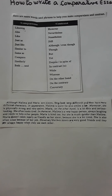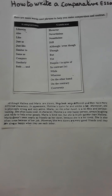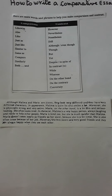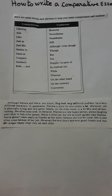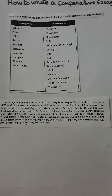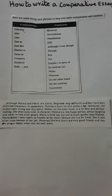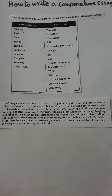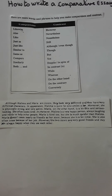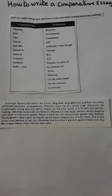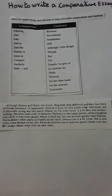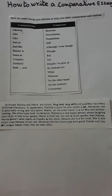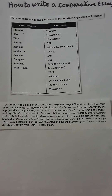Although Halima and Maria are sisters, they look very different and they have very different characters. In appearance, Halima is quite fat and smiles a lot. Moreover, she is physically strong and very active. Maria, on the other hand, is a bit thin and serious looking. She often looks tired. In character, Halima is a very happy person, always laughing and ready to help other people.